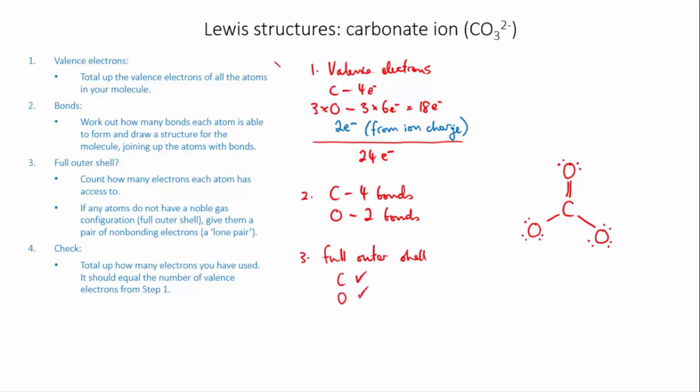All right, final step is I'm going to check that I've used the right number of electrons. I had 24 to start off with, so I used up 2, 4, 6, 8, 10, 12, 14, 16 non-bonding electrons, and I've got four bonds, so that's eight bonding electrons, which is a total of 24, which is the right number. So this is a correct structure.